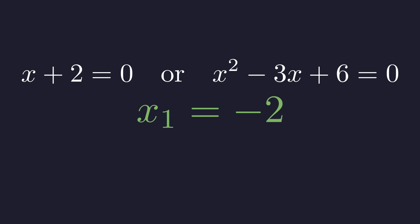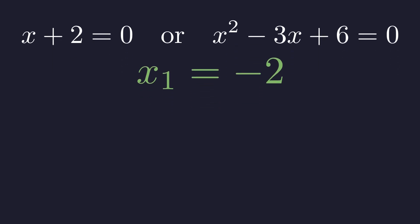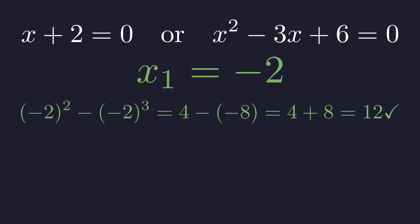Let's verify this works by substituting back into the original equation. Negative 2 squared is 4. Negative 2 cubed is negative 8. 4 minus negative 8 equals 4 plus 8, which is 12. Perfect.